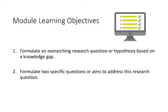For this particular module there are two main objectives — things you'll be able to do by the time you complete this module. The first is to take a knowledge gap you've identified previously and formulate an overarching research question to fill in that gap. Secondly, once you've identified that broader research question, you'll be able to formulate two more specific research aims that will address it. We'll break that down in this module.